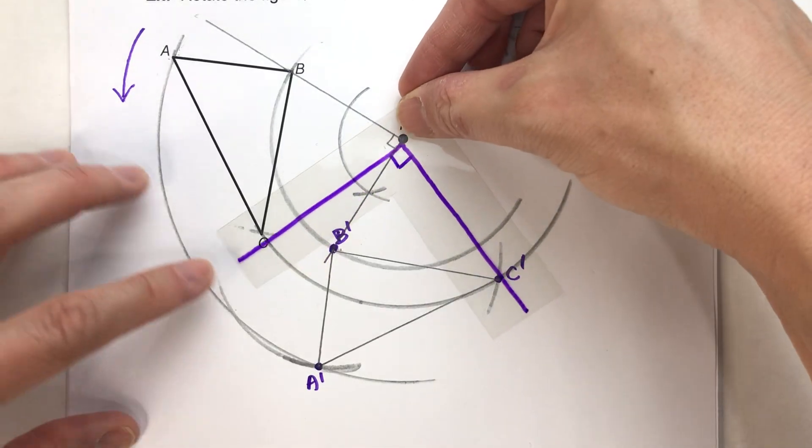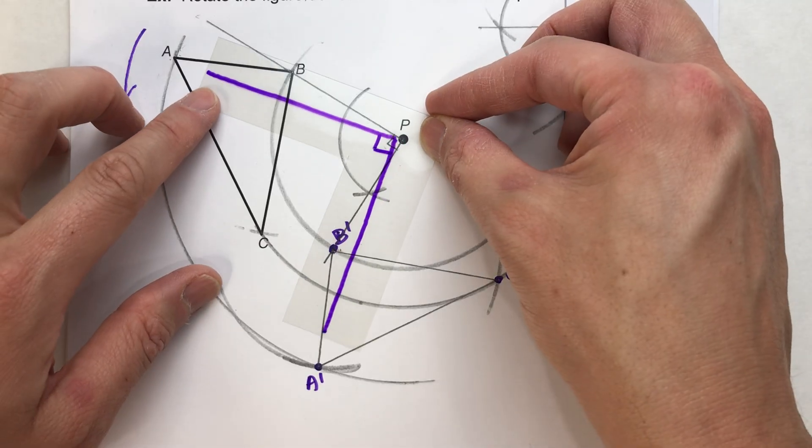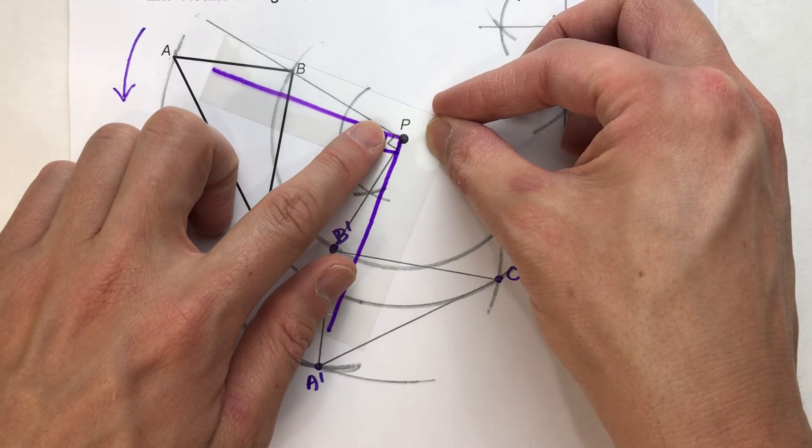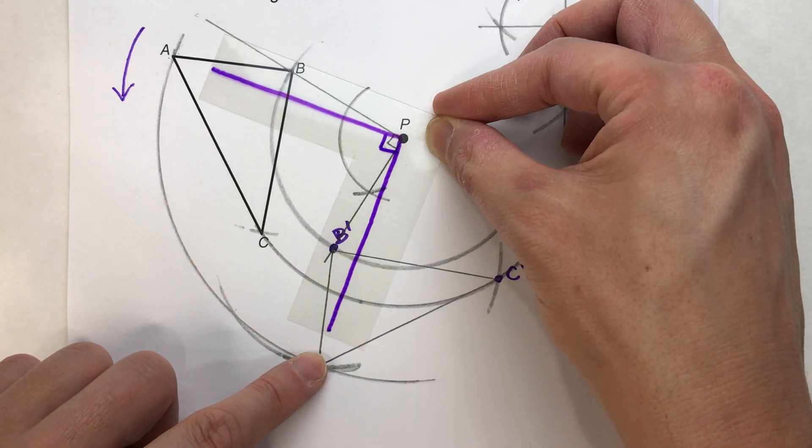And if I want to confirm, here's C and C prime. I don't think my angle's long enough for A and A prime, but you can kind of see. Here's A. Here's A prime.